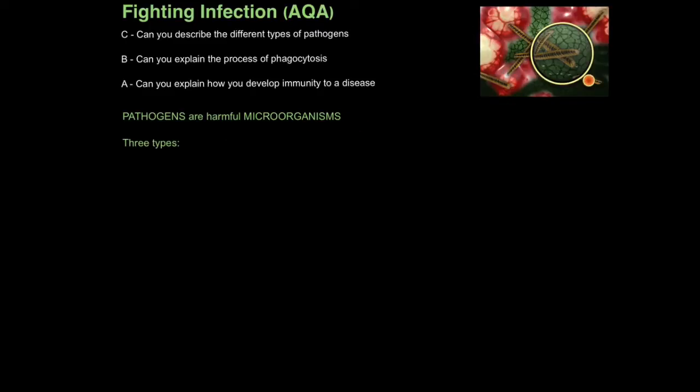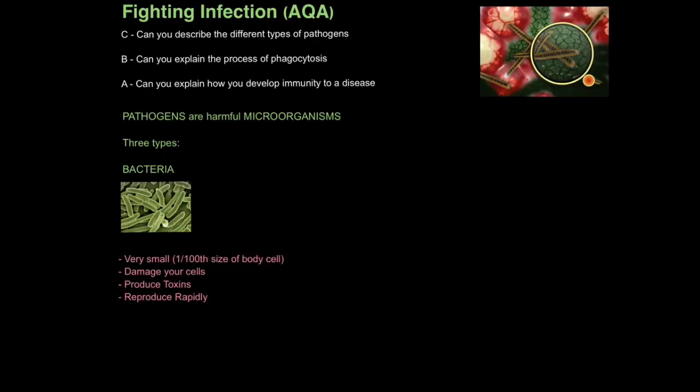There are three types of pathogens, but you really need to focus on two. Firstly, there are bacteria. Bacteria can come in all shapes and sizes. These are rod-shaped, but you can also get spiral-shaped and round-shaped bacteria. Bacteria are very small, about a hundredth the size of your normal body cells. They harm you by damaging your cells and producing chemicals called toxins. They can also reproduce rapidly, making you feel ill in a fairly short space of time.